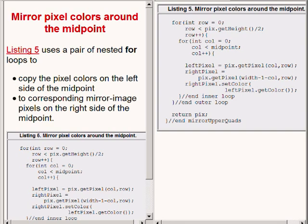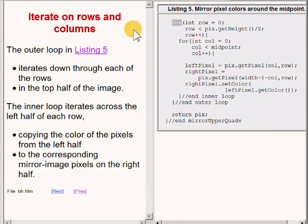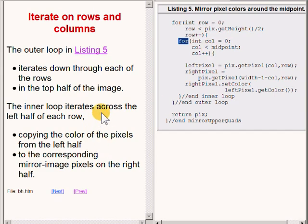The outer loop in this code iterates down through each of the rows in the top half of the image. The inner loop iterates across the left half of each row, copying the colors of the pixels from the left half to the corresponding mirror image pixels on the right half.